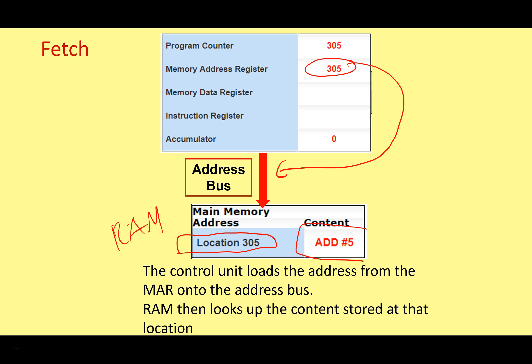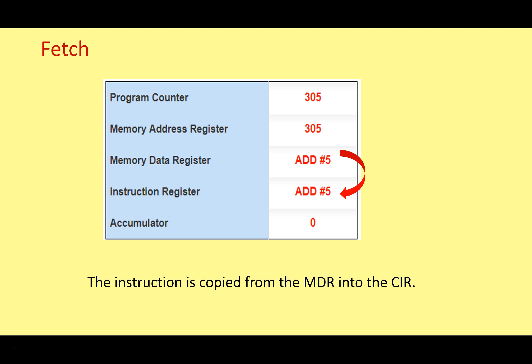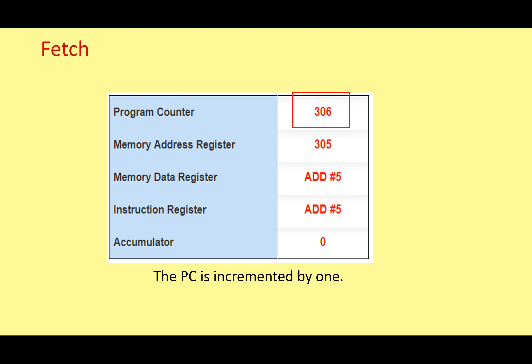There we can find the contents held in that memory location. The contents of that memory location — the instruction 'add five' — can then be copied via the data bus into the memory data register. Because it's an instruction, it will then be copied from the memory data register to the current instruction register. At the end of the fetch cycle, we increment the program counter by one — it goes from 305 to 306.